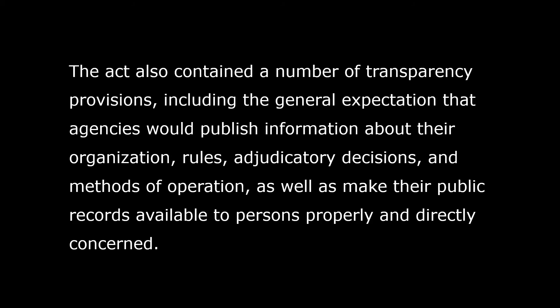The APA did not provide for legislative or executive review, but it adopted a strong presumption of judicial review of enforcement and other actions. Any person suffering legal wrong because of an agency action, or adversely affected or aggrieved by agency action within the meaning of a relevant statute, is entitled to judicial review. The act also contained a number of transparency provisions, including the general expectation that agencies would publish information about their organization, rules, adjudicatory decisions, actions, and methods of operation, as well as make their public records available to persons properly and directly concerned.